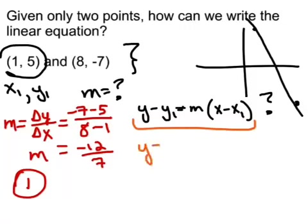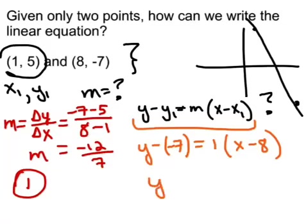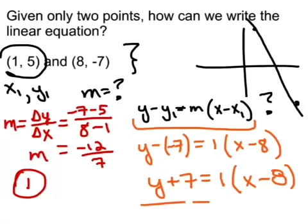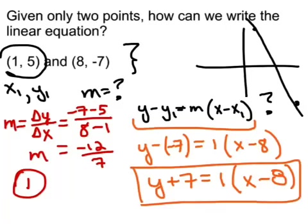So y minus negative 7 equals negative 12 over 7 times the quantity x minus 8. I put my y1, my m, and my x1 all in the correct places. And finally, I will write my final answer will be y plus 7 equals x minus 8. So sometimes you're actually not given the slope, but you have enough information to figure it out. This is x2y2. It wasn't in the formula here, but we did use it to figure out the slope. So we did need to know that.